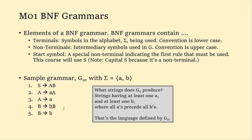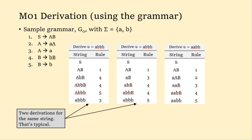Once we have these rules, we can start producing strings. The terminology we use is that we derive the string. The way to do a derivation is to make two columns — one shows the current string, and one shows the rule you used to produce that string. I start with the current string as S. You always start with the start symbol, and you don't need a rule for that.